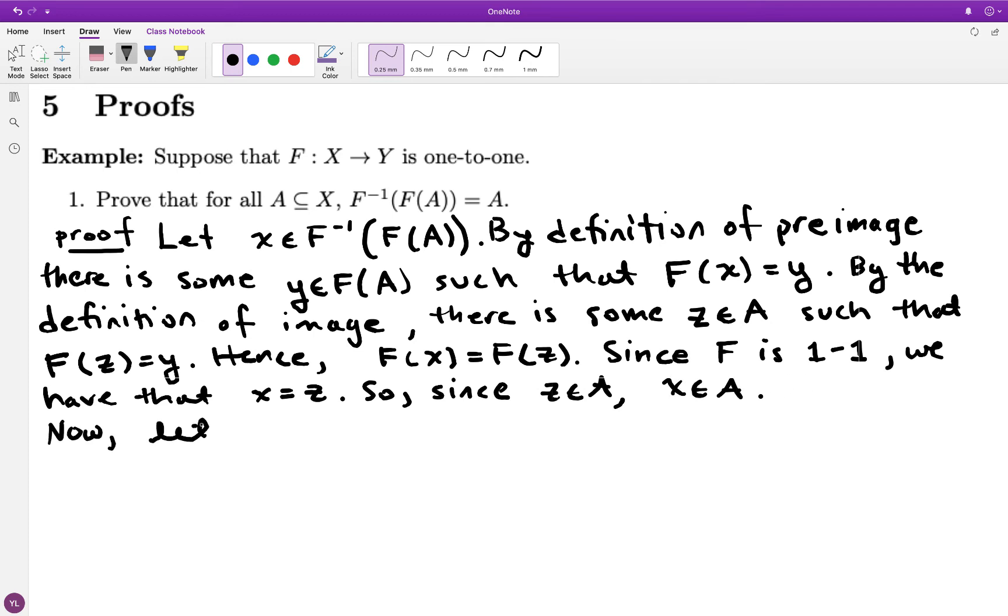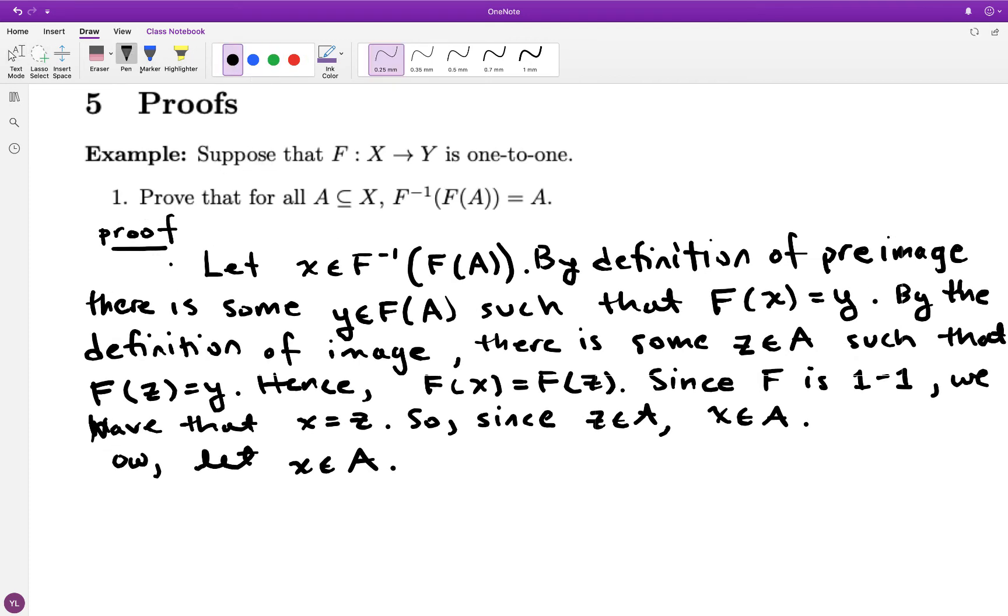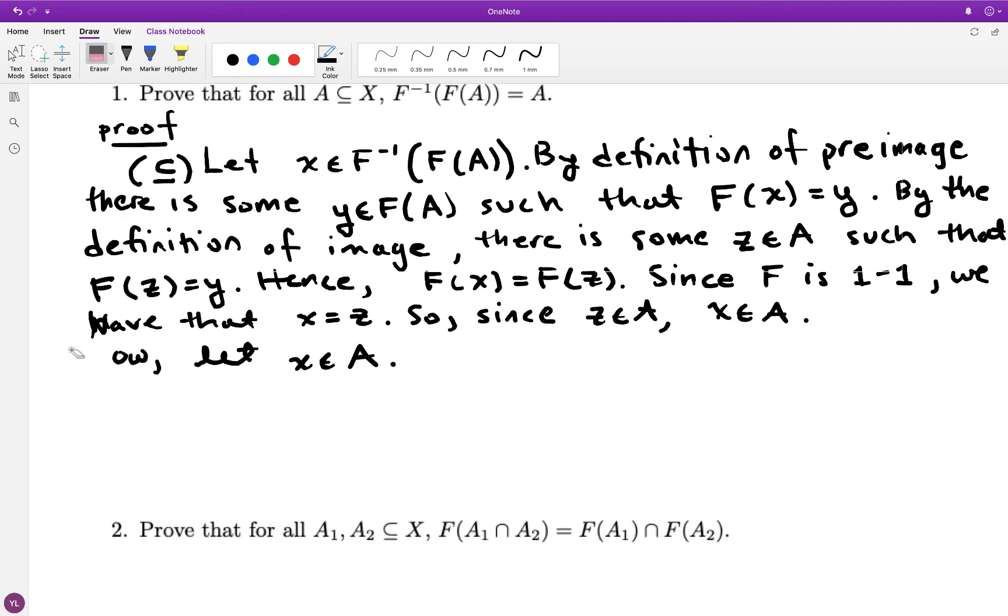So I've completed this direction of the argument. I started with an x in the left hand side, and I concluded that x was in the right hand side. I just need to do the other direction of set equality, and now I'm finally realizing that I need to label those parts of my proof appropriately.